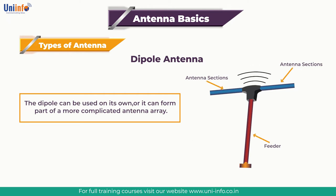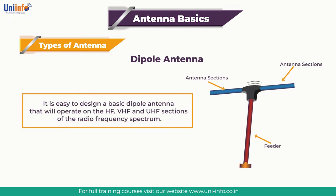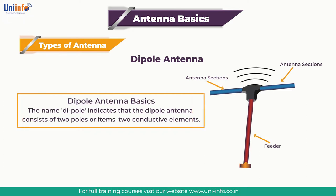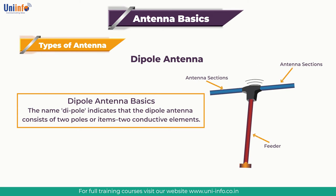The dipole is relatively simple in its basic implementation and many of the basic calculations are quite straightforward. It is easy to design a basic dipole antenna that will operate on the HF, VHF, and UHF sections of the radio frequency spectrum. The name 'Dipole' indicates that it consists of two poles — two conductive elements. Current flows in these two conductive elements, and the current and associated voltage cause an electromagnetic wave, or radio signal, to be radiated outwards from the antenna.